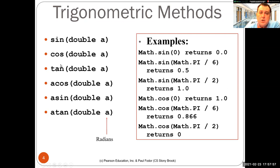Sinus of math dot pi divided by six is 0.5. Then we have cosinus, tangenta, a cosinus, a sinus, a tangenta. These are the trigonometric methods.